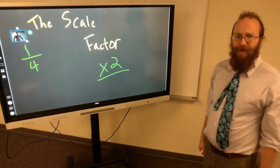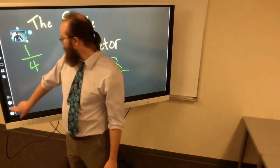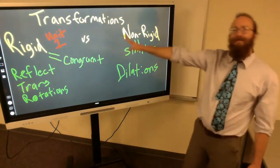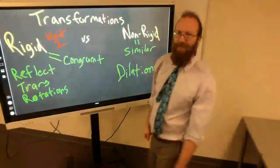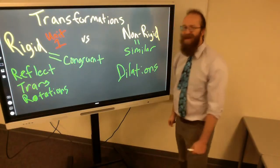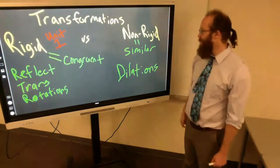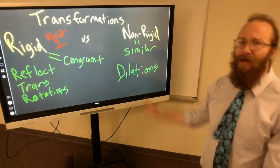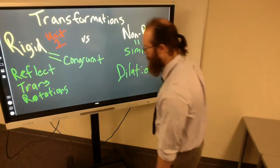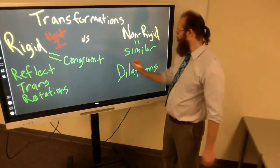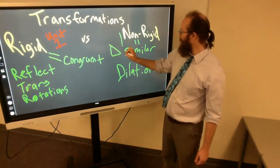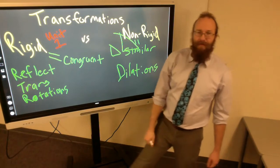So we've gone over a few new words today, and I'd like to review them real fast. First, we have rigid transformations, which are reflections, translations, and rotations. And they make congruent shapes. And then we have non-rigid transformations, which are just dilations. And they make similar shapes, which are shapes with the same basic layout but different sizes. Awesome.